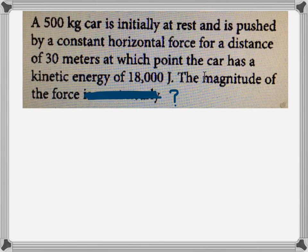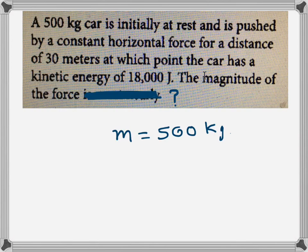Here is the motion problem: a 500 kg car is initially at rest and pushed by a constant horizontal force for a distance of 30 meters, at which point the car has a kinetic energy of 18,000 joules. We need to find the magnitude of the force. This was from a SAT prep book as an MCQ question.